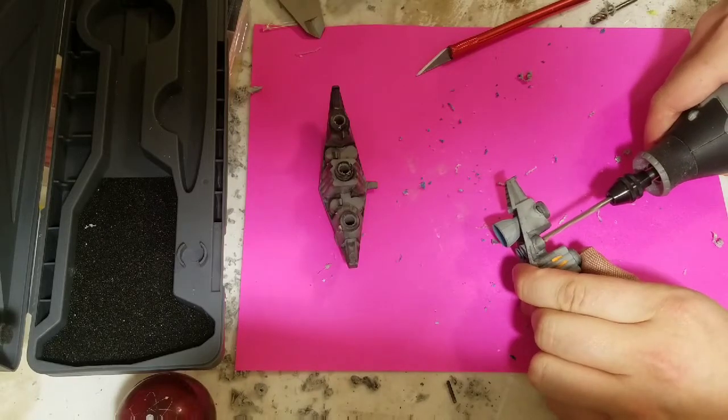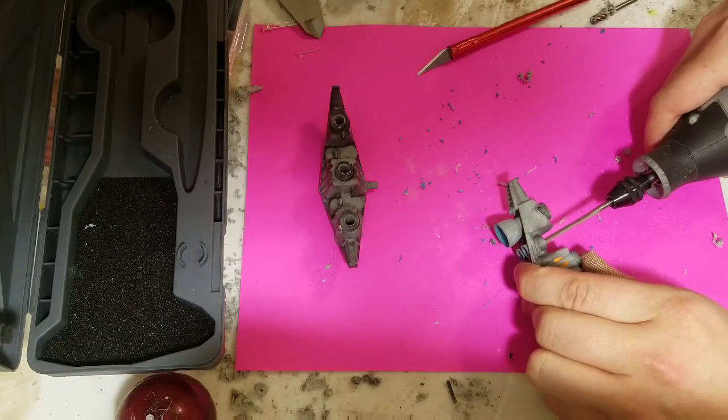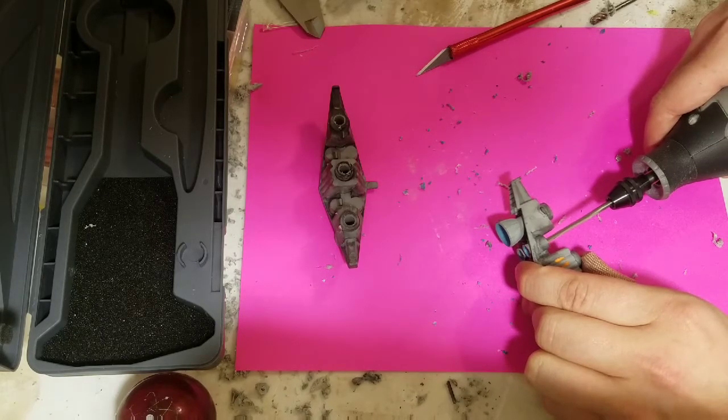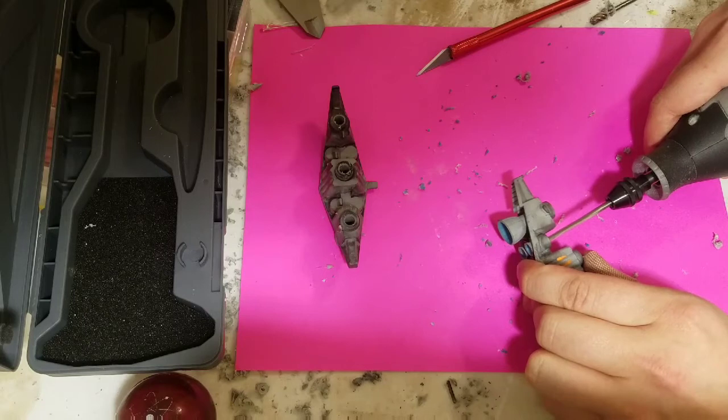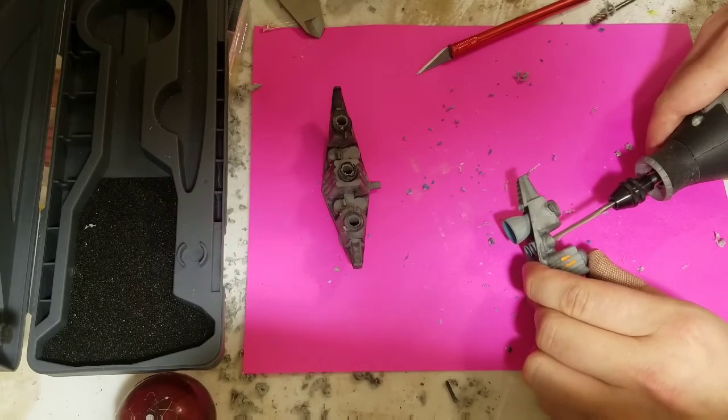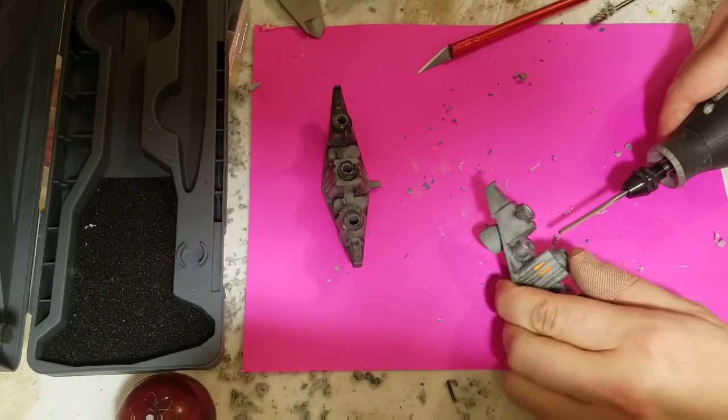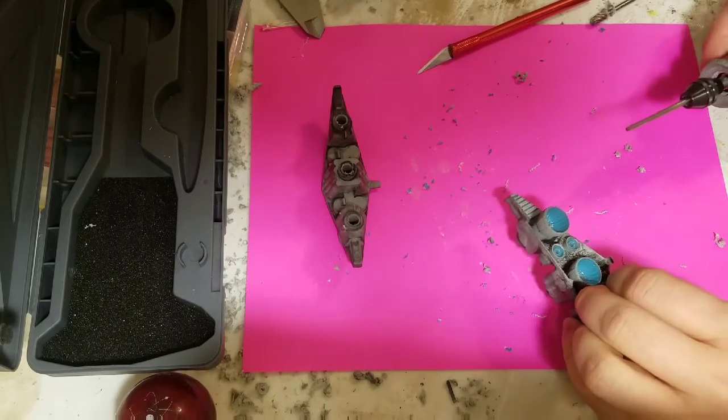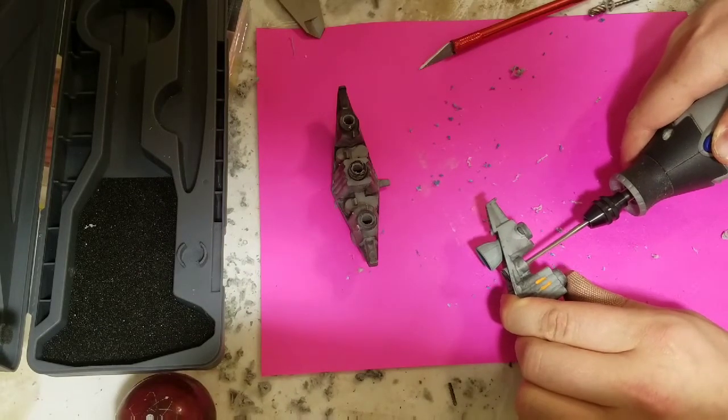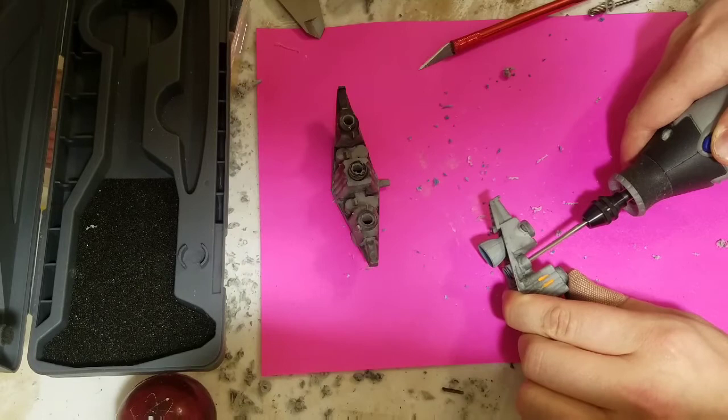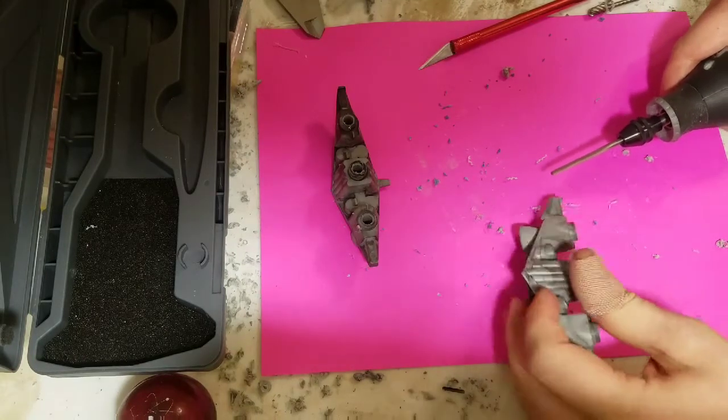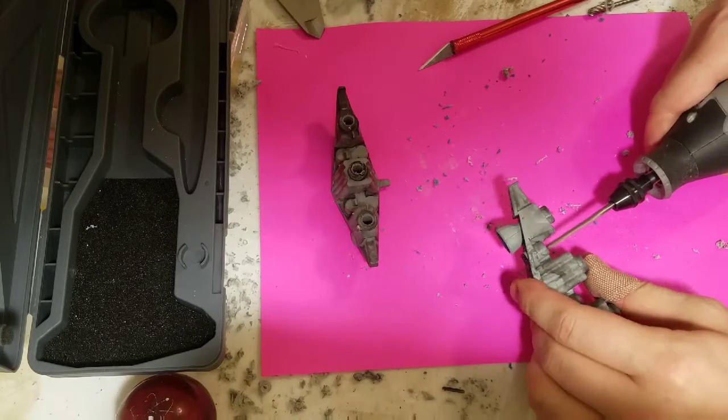With the three primary engines done, I'll use a 3mm drill bit for the four secondary engines. It's the same concept of drilling through just slightly. You don't want to go too far and mar the front of the engines, so you can do it by feel or put a marker on your drill bit to know how far to drill. All we're trying to do is open the rear of the engines up so you can feed the fiber optic or LED through.